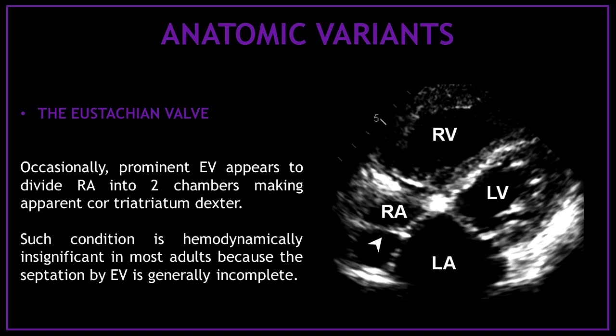Occasionally, a prominent eustachian valve appears to divide the right atrium into two chambers, making apparent cor triatriatum dexter. This condition is hemodynamically insignificant in most adults because the septation by the eustachian valve is generally incomplete.